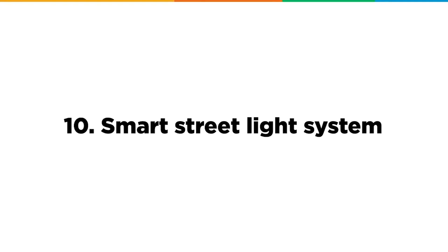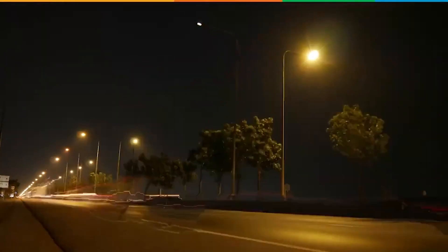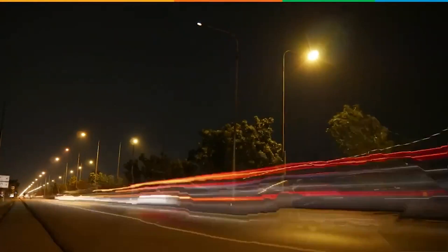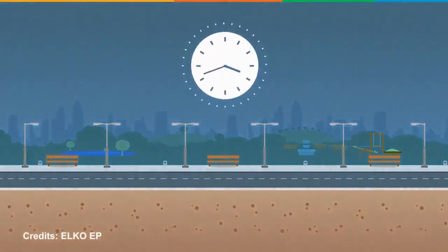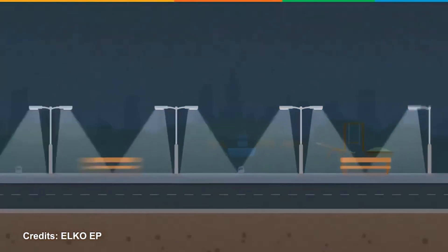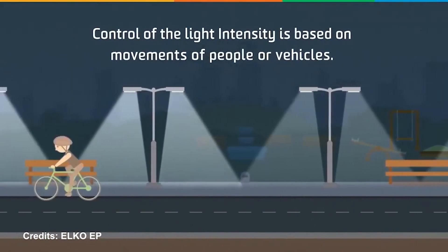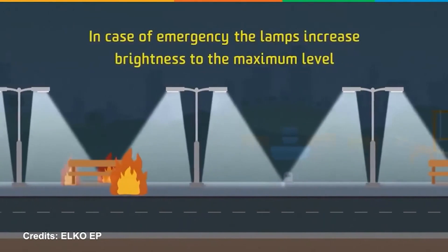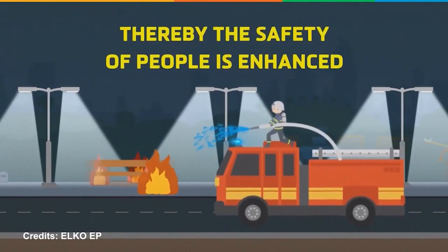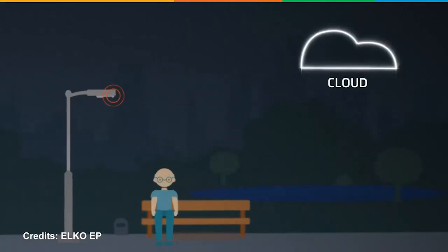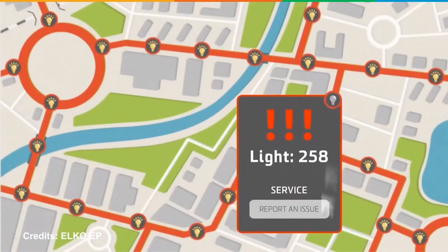Finally, at number 10, we have Smart Streetlight System. This IoT-based streetlight monitoring system not only monitors but also ensures low power consumption and detects faulty lights. The streetlights have external sensing that automatically turns on at the desired intensity based on the lighting needed — control of light intensity is based on the movement of people or vehicles. In case of an emergency, lights increase to maximum brightness, ensuring safety. When deployed as part of a Smart City, users can be informed about outages and register a complaint for immediate service.